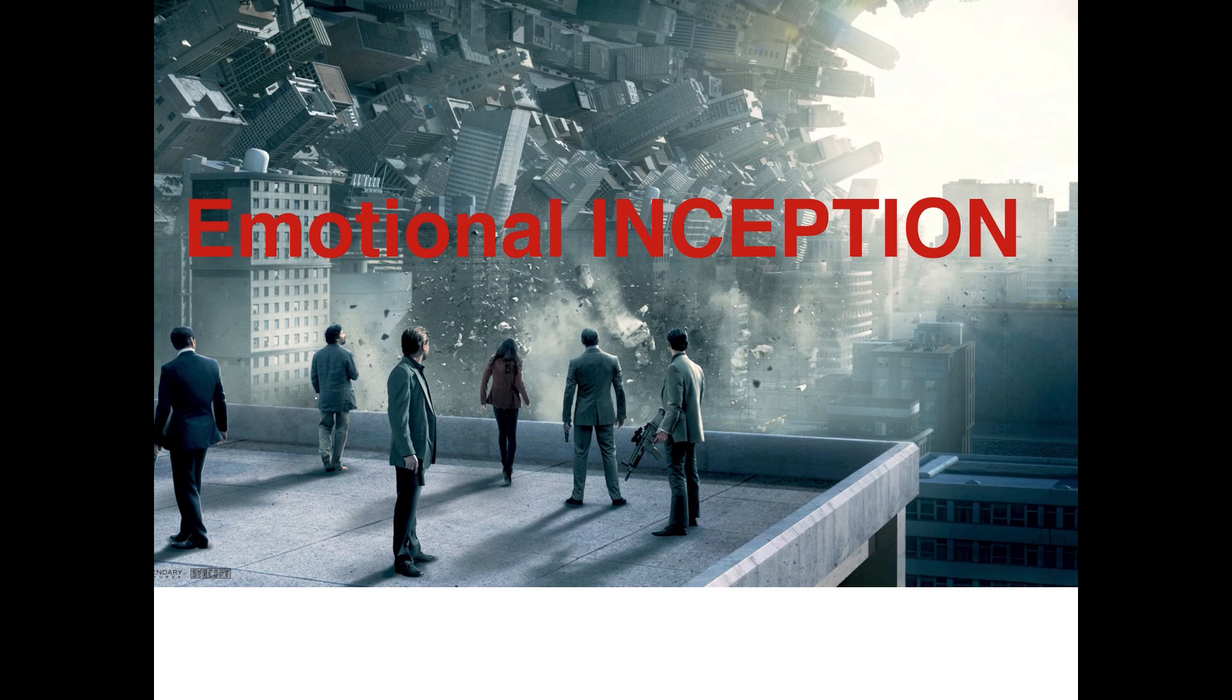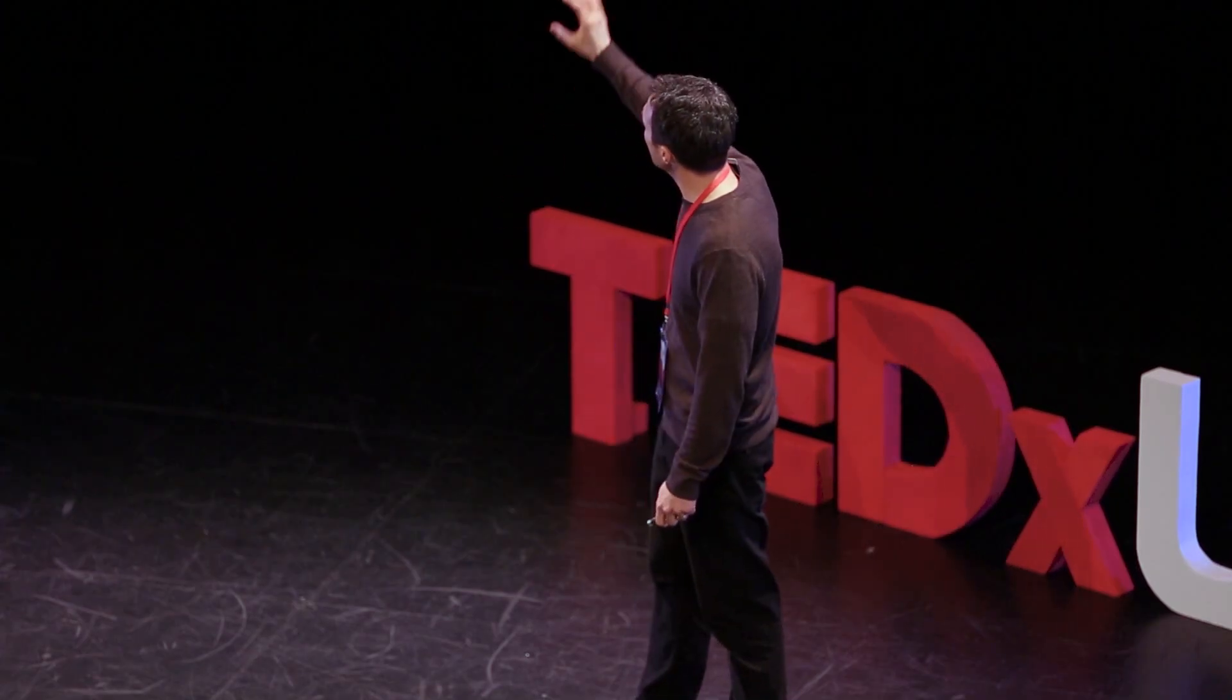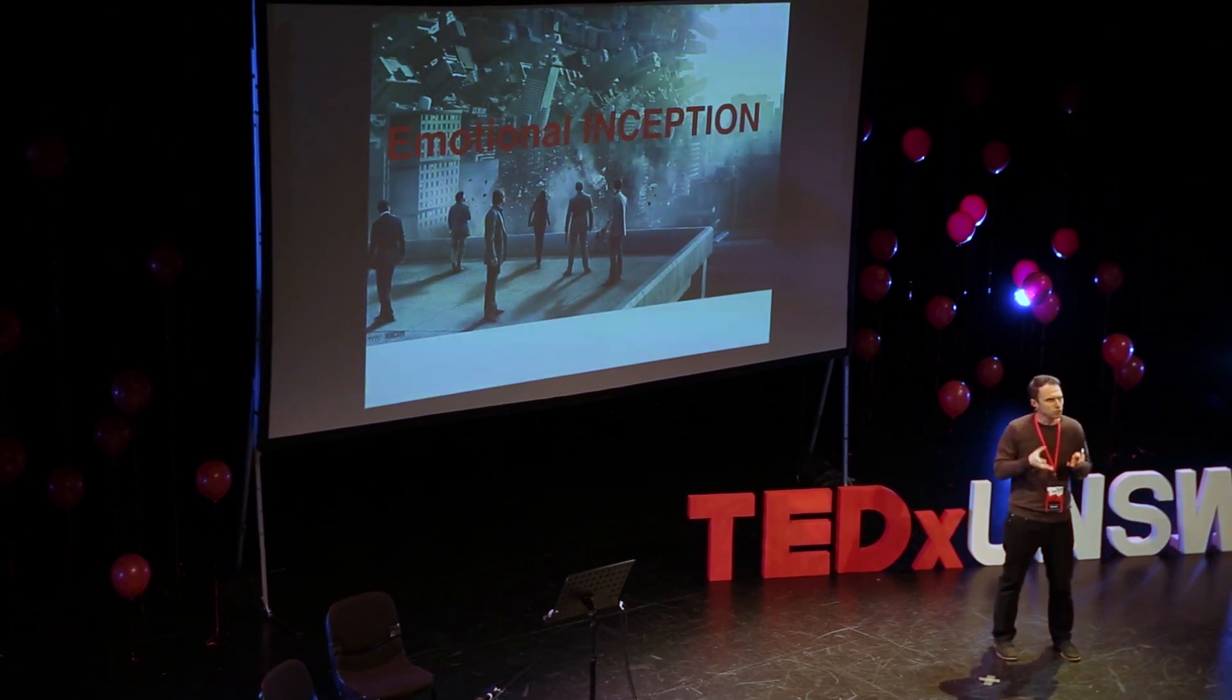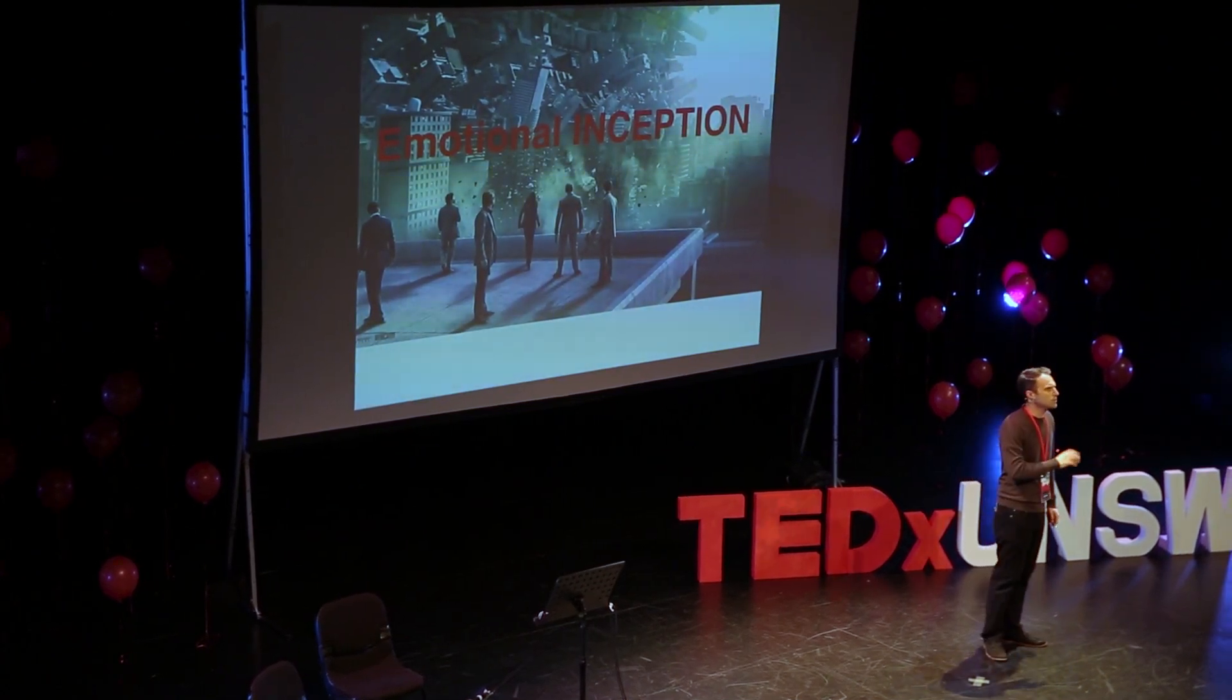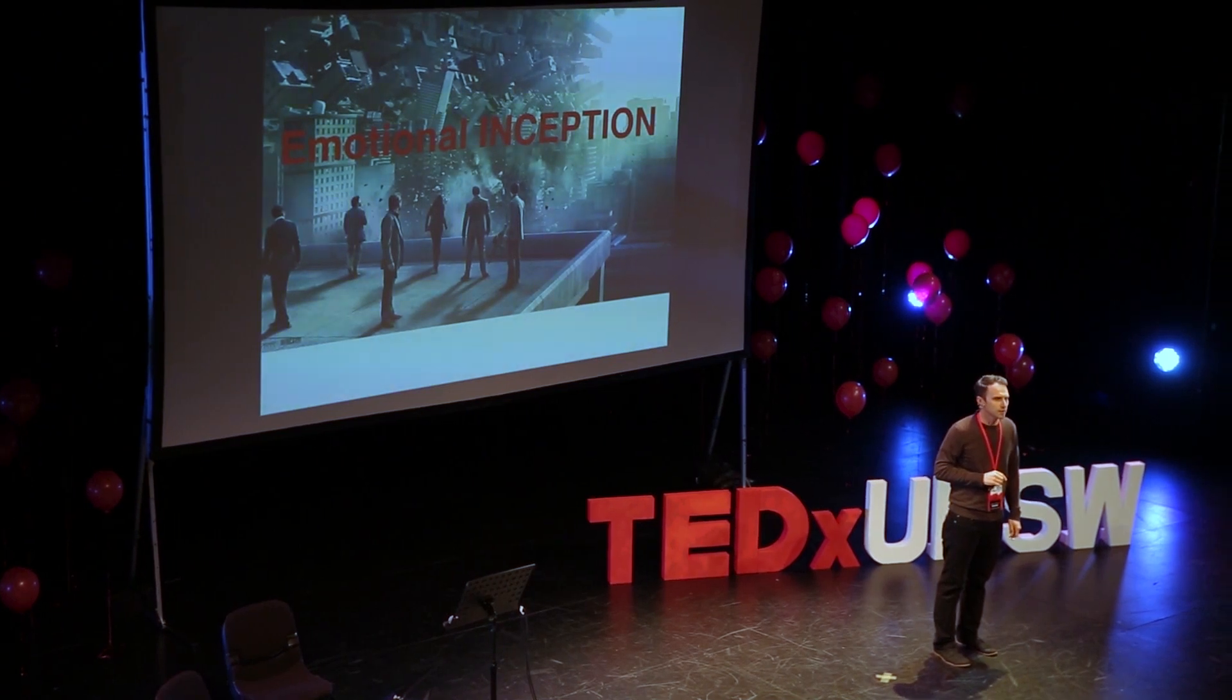So, you've seen the film Inception. The whole idea in that film is to incept an idea into someone's mind, to get it in there without them having any idea. So, we need a way to do what we call Emotional Inception. To get an emotion into someone's mind without them knowing we've done that. And there's a great illusion we can use to do that.